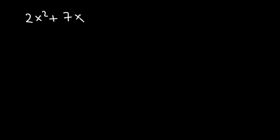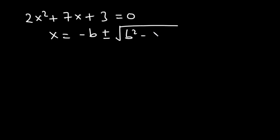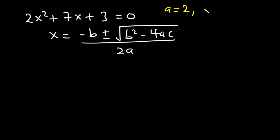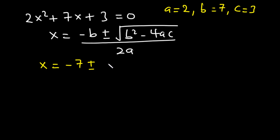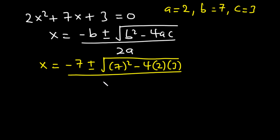The roots of 2x² + 7x + 3 = 0 can also be found using the general quadratic formula: x = (−b ± √(b² − 4ac)) / 2a. From this equation, a = 2, b = 7, and c = 3. We substitute these values into the formula.